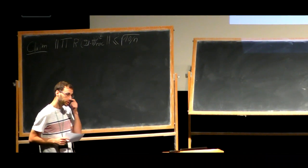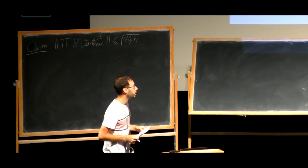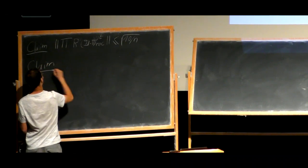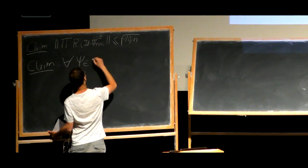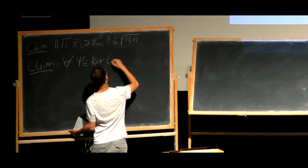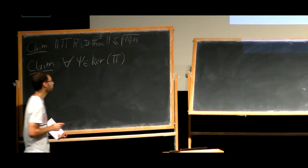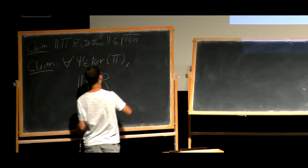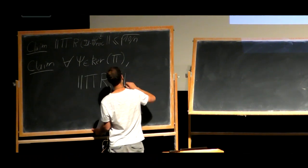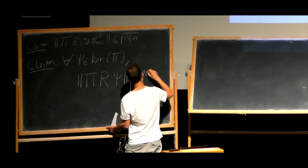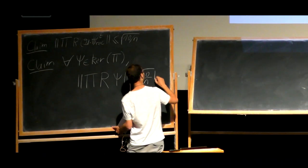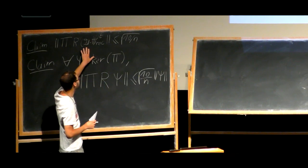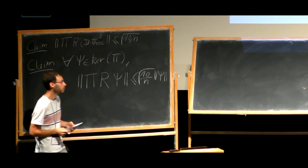We will actually show something stronger, which is the claim at the bottom of the slide: for all states psi which are in the kernel of the projector pi — being in the kernel means you haven't recorded a 1 — for all such states, if you do one extra recording query, the probability of observing a 1 is going to be at most square root t over n times the norm of psi. If you just plug identity minus pi times psi_rect_t into this claim, you get the result that you want to show.